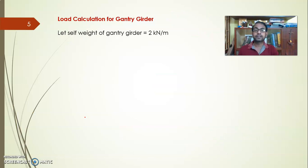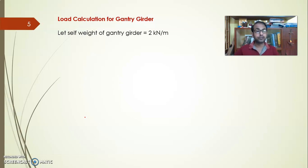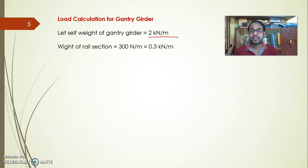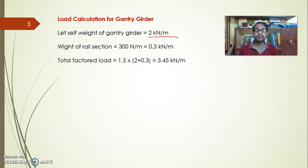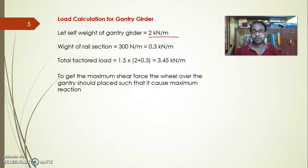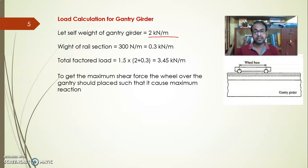The self-weight of the gantry girder is assumed as 2 kN/m (or 3 kN/m for cranes with lifting loads of 300 kN or 30 tons). For this 20-ton capacity crane, 2 kN/m is used by thumb rule. Adding the rail section weight of 300 N/m, multiplying by the load factor, gives a factored UDL due to self-weight of 3.45 kN/m.